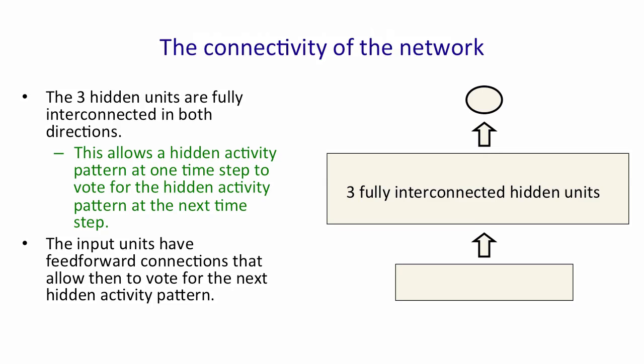The input units have feedforward connections to the hidden units and that's how it sees the two digits in a column. And similarly, the hidden units have feedforward connections to the output unit and that's how it produces its output.